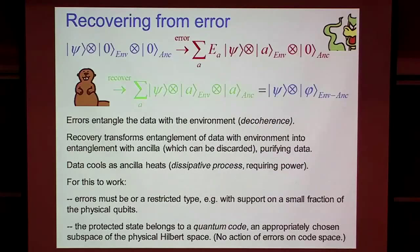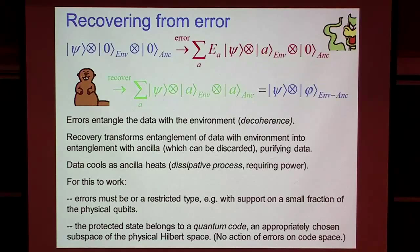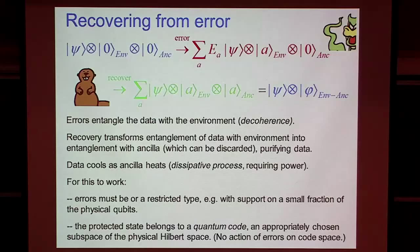Quantum error correction is the idea that we can recover from errors which occur due to the interaction of a system with its unobserved environment. Those interactions can cause a system and its environment to become entangled, driving decoherence of the system. But that decoherence can be reversed. We can apply a unitary map to the system and some ancilla that we control, which can transform entanglement of the environment with the system into entanglement of the environment with that ancilla, which we can then discard and replace by a fresh ancilla for future rounds of error correction.